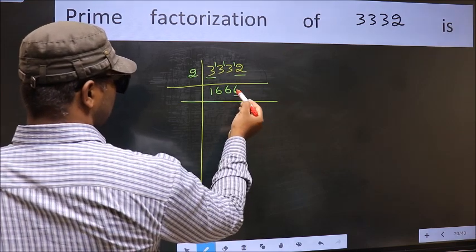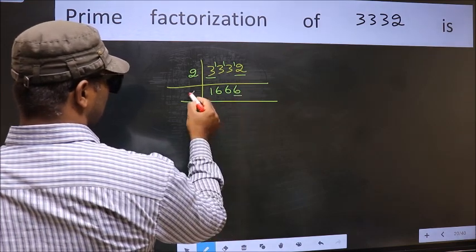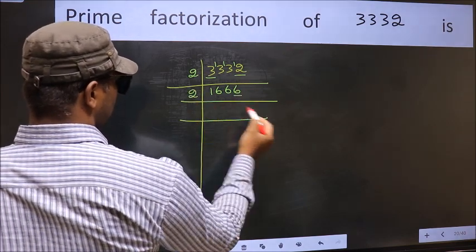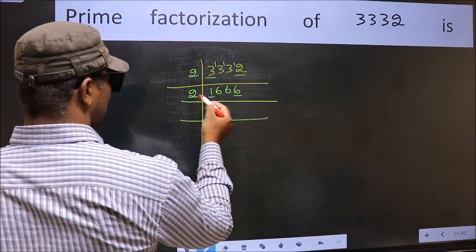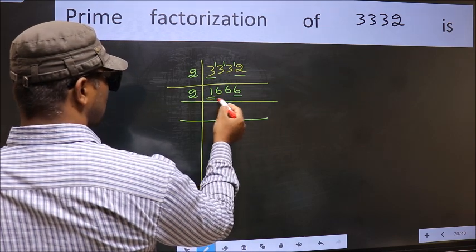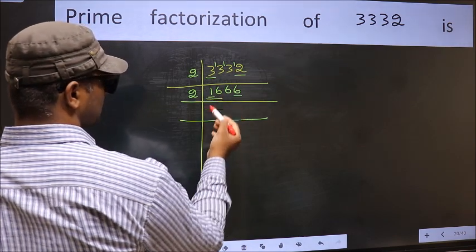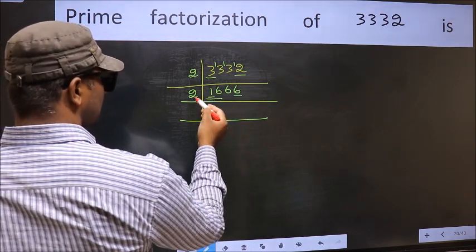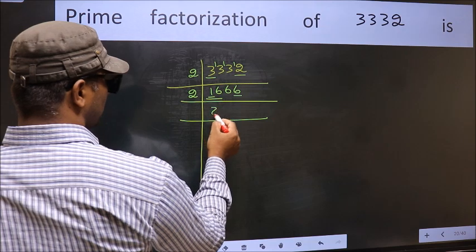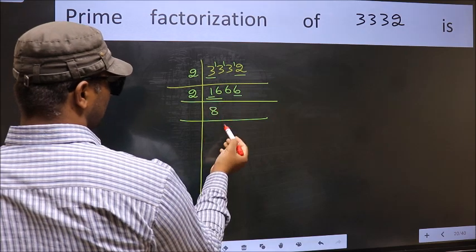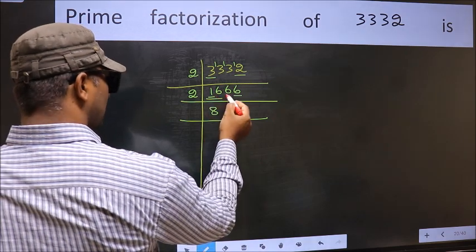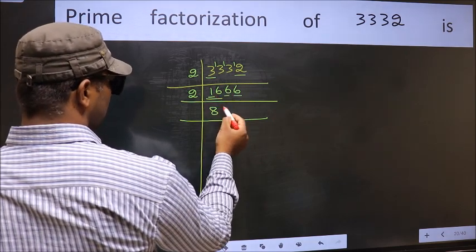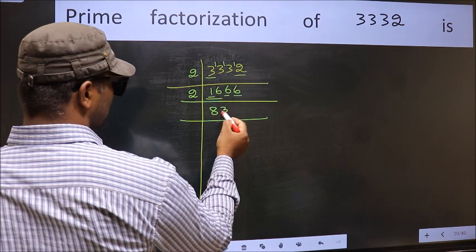Now the last digit is 6, so take 2. First number: 1 is smaller than 2, so take two digits: 16. When do we get 16 in the 2 times table? 2 times 8 is 16. The other number: 6. When do we get 6 in the 2 times table? 2 times 3 is 6.